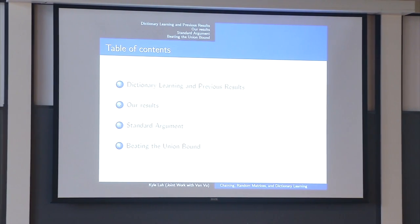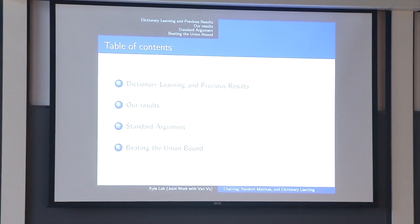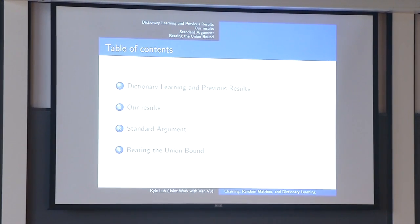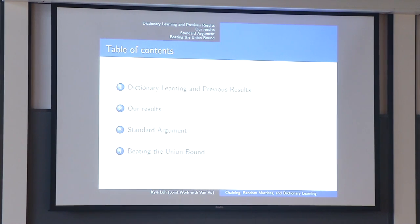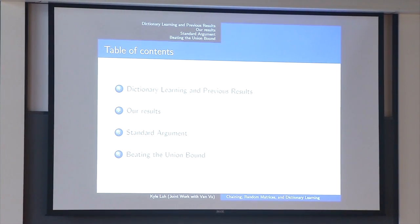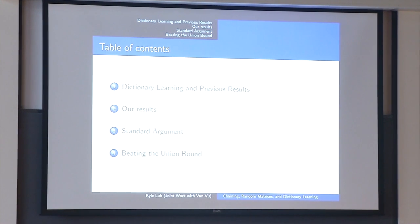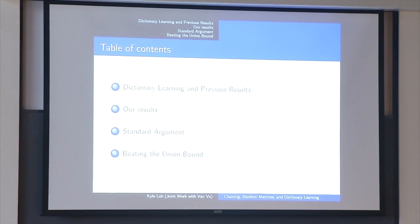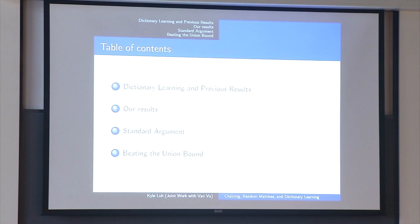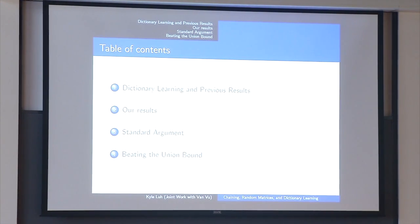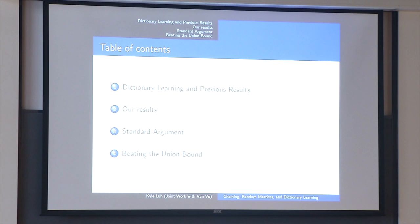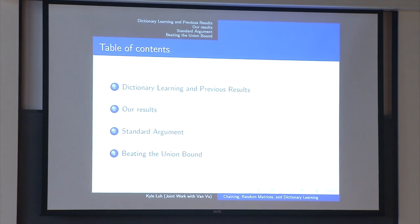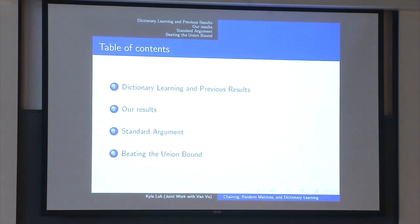Let me give a brief overview of the presentation. I'll give an incomplete survey of dictionary learning — the problem, some of the applications, and some previous results. Then we'll segue into some of my results with Van Vu, focusing on proof techniques that involve chaining. At the end we'll mention some more recent results that improve our bounds by some different authors.